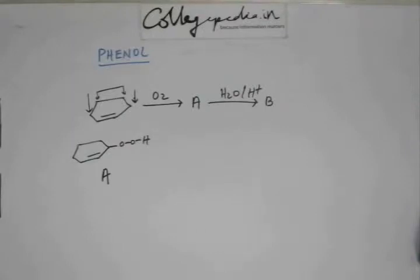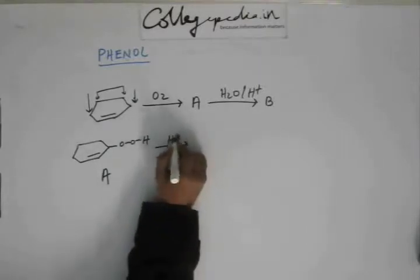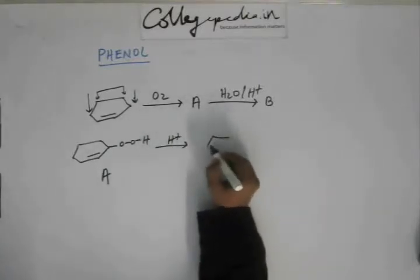Next thing is you hydrolyze that. Previously this peroxide will be hydrolyzed. H+ will come to an outer carbon because there will be lesser hindrance.